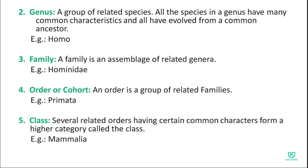The fifth level is class. Several related orders having certain common characters form a higher category called a class. For example, class Mammalia includes humans, dogs, and cats — all organisms that have mammary glands belong to Mammalia.